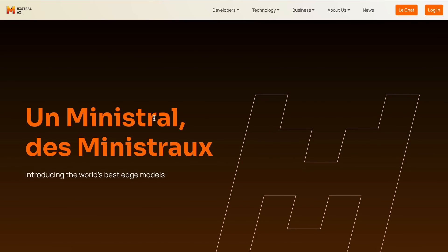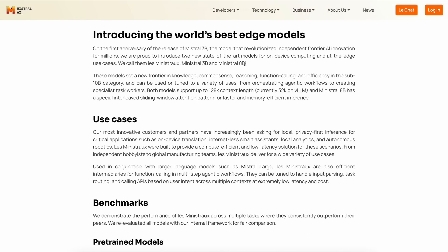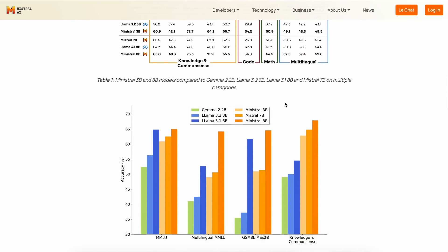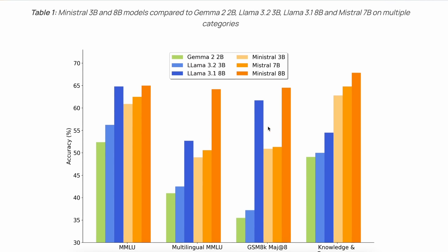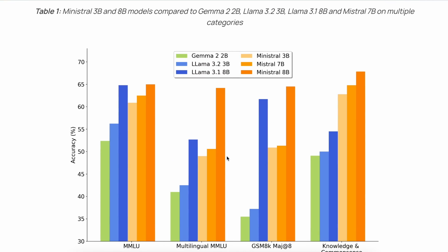There are two models in this launch: a 3B model and an 8B model. These new models also support function calling and have a 128K context length, which is great to see. They've also shared benchmarks, and if we look at them, you can see that the 8B model performs similarly to LLaMA 3.1, while the 3B model performs significantly better than LLaMA 3.2. In multilingual MMLU, both models perform significantly better than their counterparts, which is good.